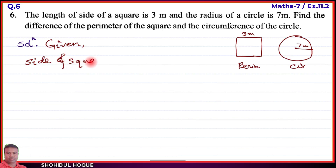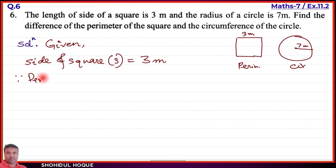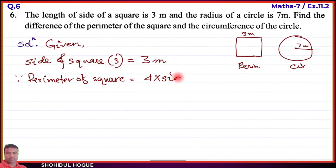Given: side of square, represented as 's', equals 3 meters. Now we find the perimeter of the square. Perimeter of square equals 4 into side. So 4 into 3 equals 12 meters. The perimeter of the square is 12 meters.